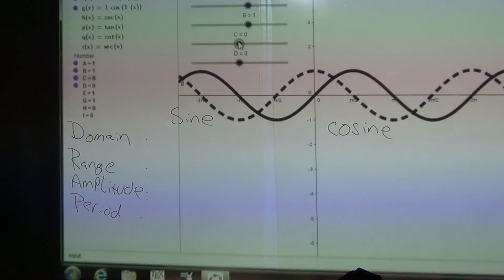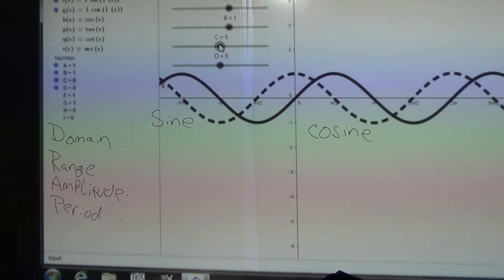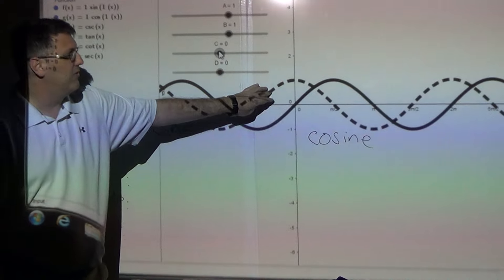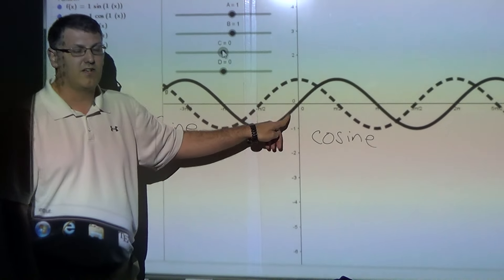All right, so we're going to be talking about sinusoidal waves. On the screen here, you have the dotted line is the cosine wave, the solid line is the sine wave.